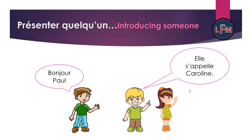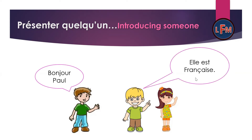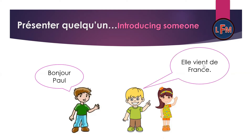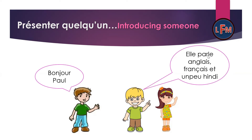Elle s'appelle Caroline — her name is Caroline. Elle a vingt ans — she is 20 years old. Elle est française — she is French. Elle est institutrice — she is a teacher. Elle vit au Canada — she lives in Canada. Elle vient de France — she comes from France. Elle parle anglais, français et un peu hindi — she speaks English, French, and a little Hindi.